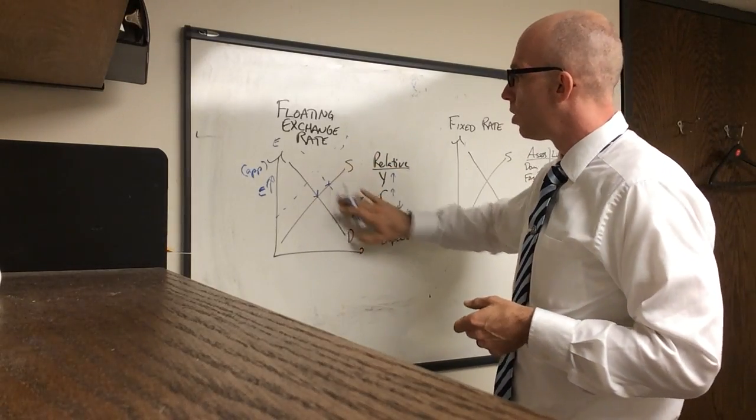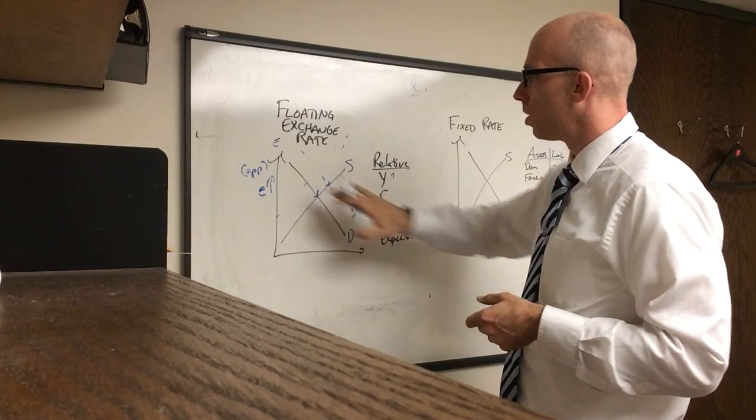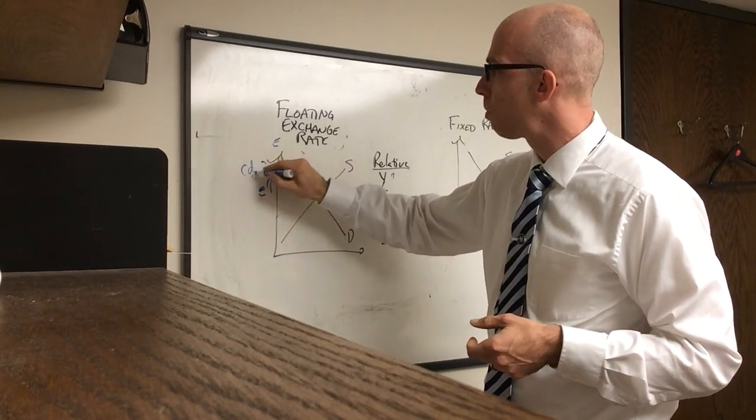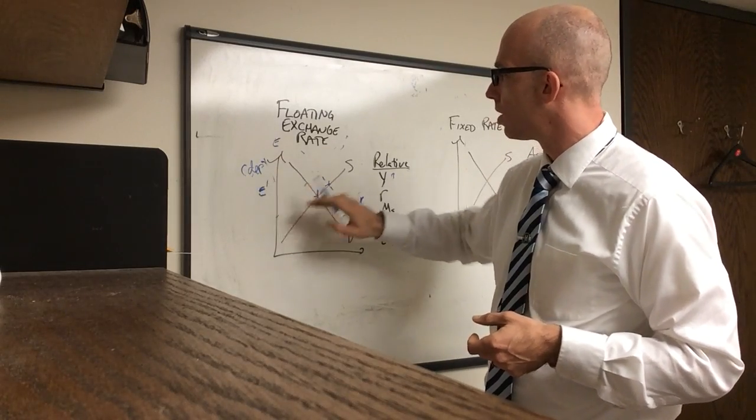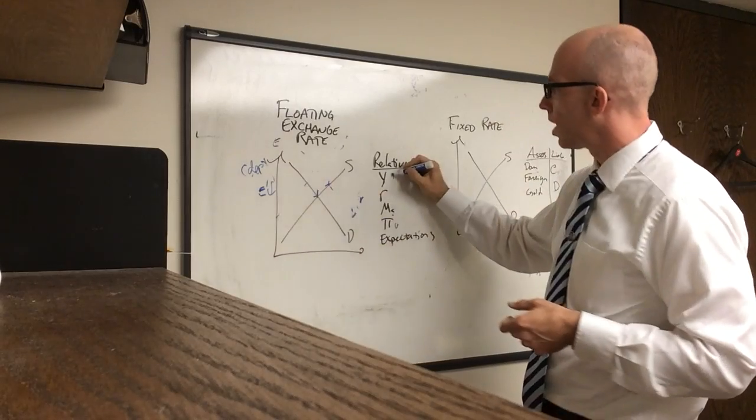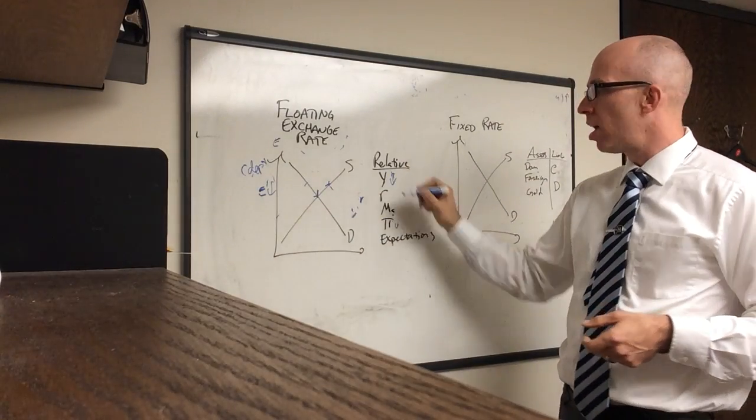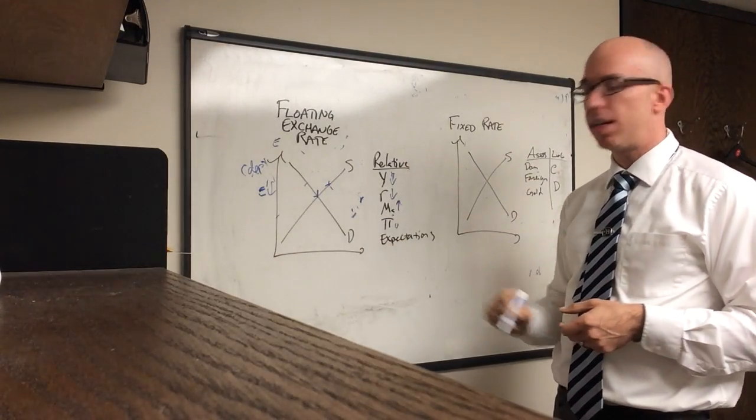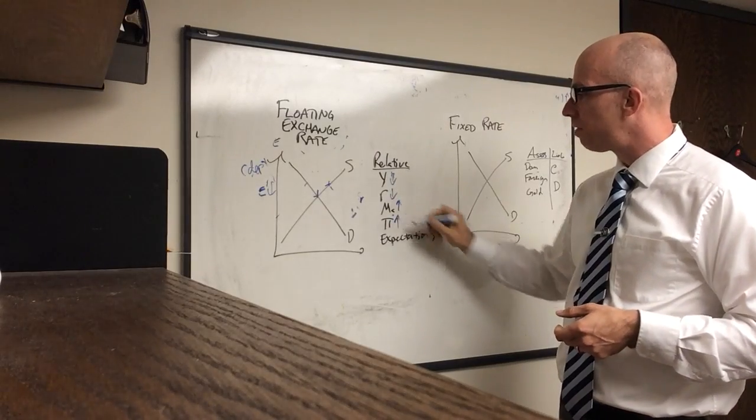Now, as you might guess, you could see that the opposite things cause a currency to fall. So to depreciate, you need the currency to go down. And so again, slow economic growth, a cut in interest rates, an increase in the money supply, or high inflation.